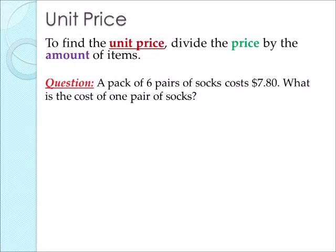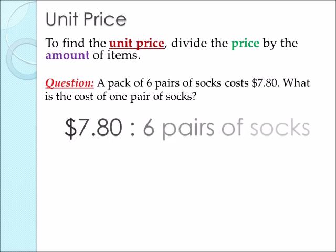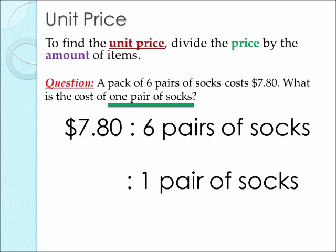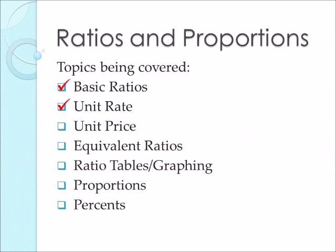Next topic we're going to be talking about is unit price. Much like unit rate, to find the unit price, you're dividing. However, in unit price, you must divide the price by the amount of items. Here's our question: a pack of 6 pairs of socks costs $7.80. What is the cost of 1 pair of socks? We're finding unit price — unit being 1. Price always goes first when writing our ratio, so it's $7.80 per 6 pairs of socks. We need to divide both sides by 6. $7.80 divided by 6 gives us $1.30 for 1 pair of socks.